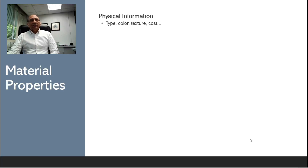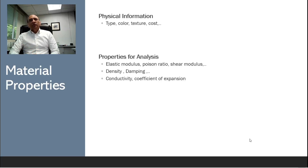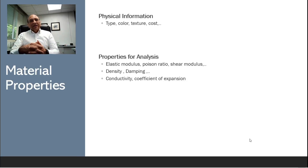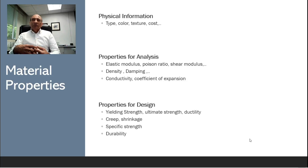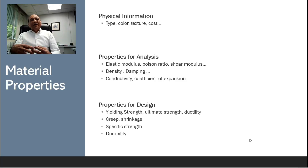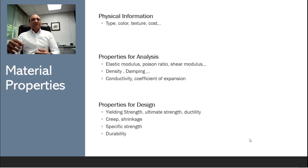Material properties of interest include: first, physical information such as color, texture, and cost. Then, properties for analysis which may include elastic modulus, Poisson's ratio, shear modulus, density, damping, and conductivity. There are also properties specific to design, such as yielding stress, ultimate strength, creep, shrinkage, specific strength, and durability. The combination of all these will define the material, and these properties will be used to understand the material and ultimately create structures.